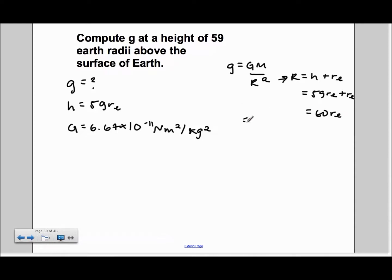We plug that back into the formula, and we get g is equal to GM over 60RE squared.